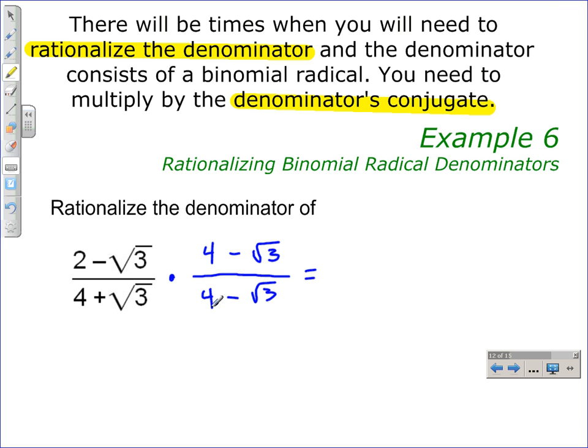So when we multiply the denominator here, we can use the difference of squares and just square each term. 4 squared is 16, and the square root of 3 squared is 3, and we will subtract those two values.